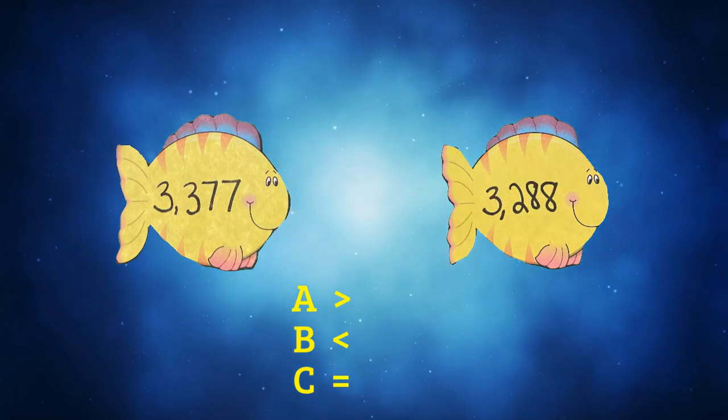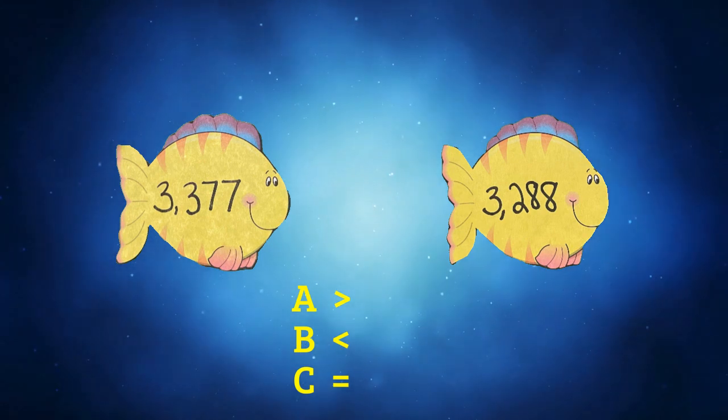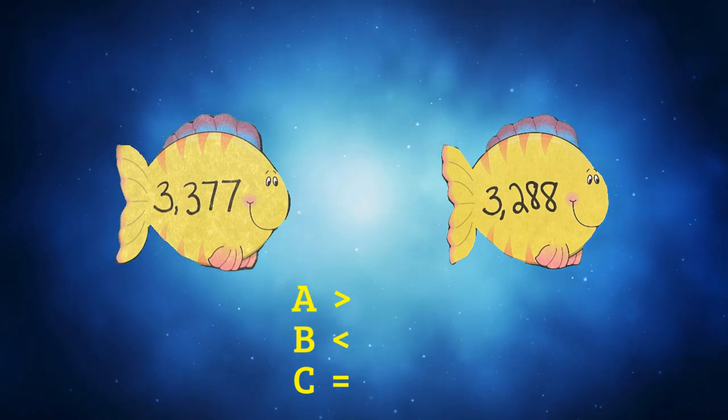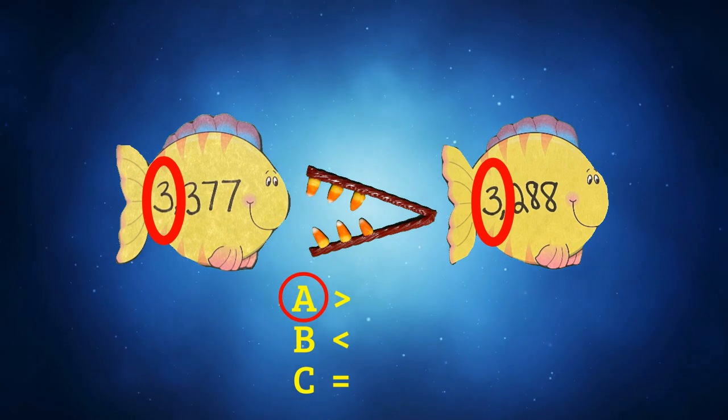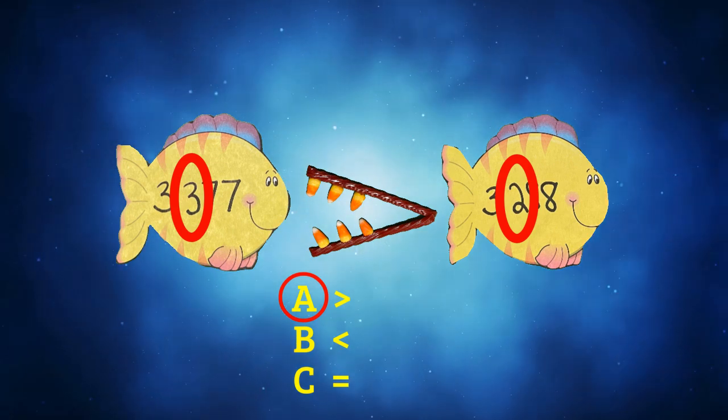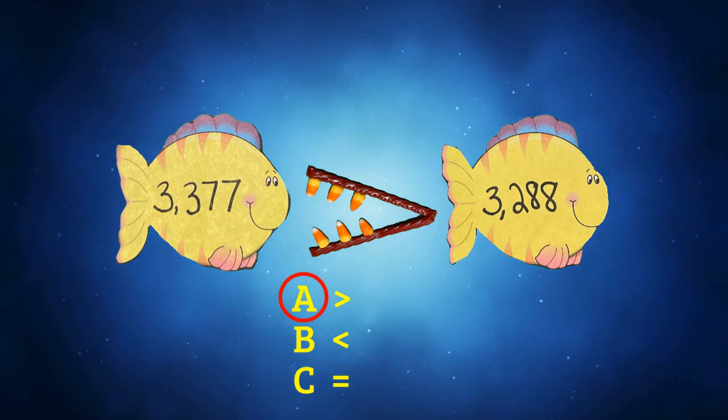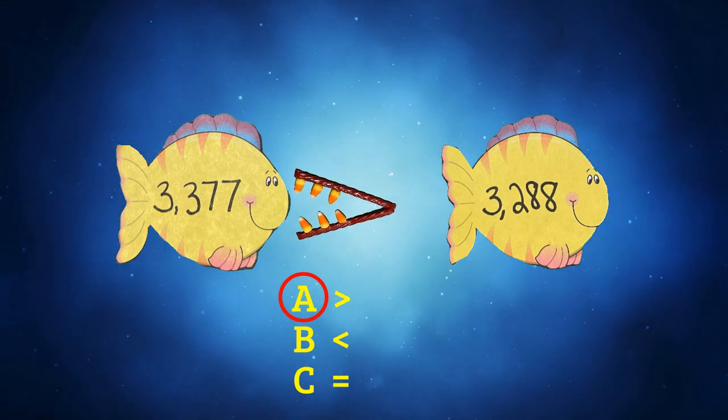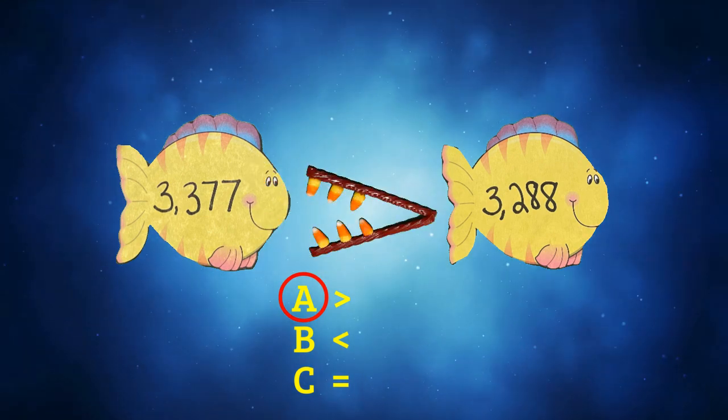Here's our final question. Is 3,377 greater than, less than, or equal to 3,288? Pause the video and write down your answer. If you said that the answer is A, greater than, then you are correct. Both numbers have a three in the thousands place, so we have to look at the hundreds place. Three is a bigger number than two, so that means that 3,377 is the biggest number. You have to make sure that you're eating that biggest number. Chomp, chomp, chomp. 3,377 is greater than 3,288.